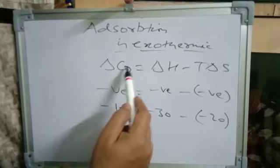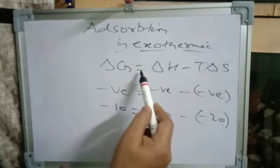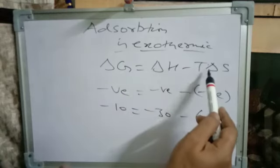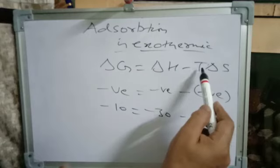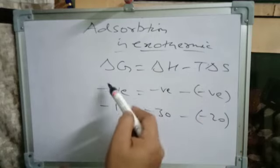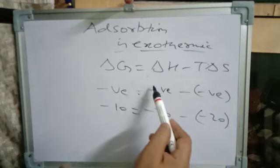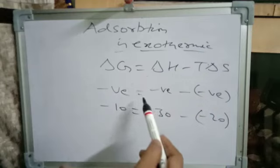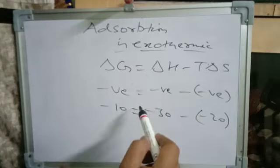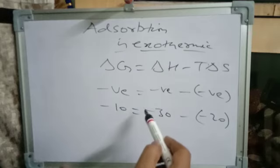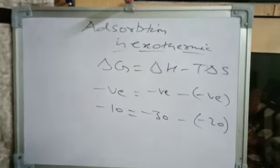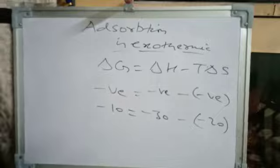This is important. ΔG = ΔH − TΔS. Since adsorption is happening, ΔG is negative. For ΔG to be negative, ΔH must be negative and greater in magnitude than TΔS. Revise till this — that adsorption is exothermic. Thank you.